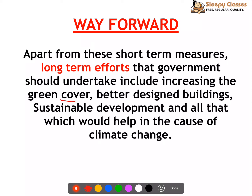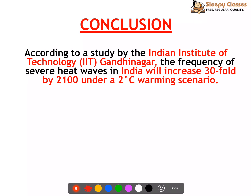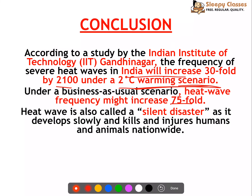In the way forward, long-term efforts include increasing green cover, better-designed buildings, and sustainable development to address climate change and reduce the effect of heat waves. A study by the Indian Institute of Technology found that the frequency of severe heat waves in India will increase 30-fold by 2100 under a 2-degree warming scenario, and could increase 75-fold under a higher warming scenario. These projections make it clear that measures are very important.